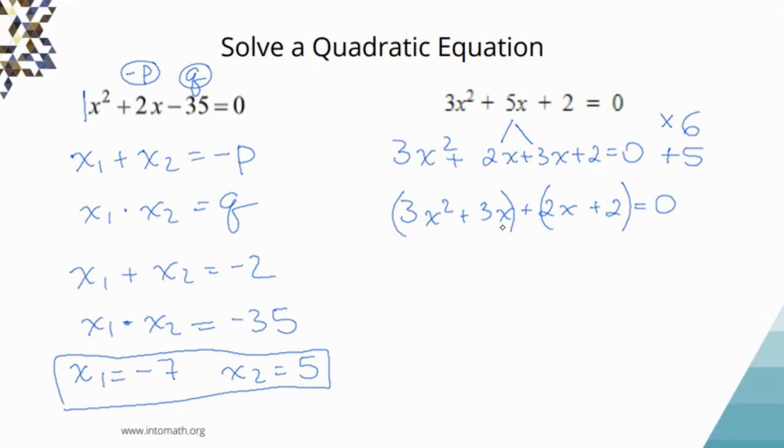From here, the common factor is 3x, and the expression in brackets becomes x + 1. Plus—don't lose this plus here or minus if it's a minus. That's a common mistake. Try not to make it. Keep it in mind. It's not multiplication, it's addition. From here, the common factor is 2, and we end up with x + 1.